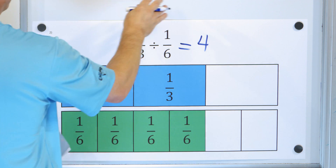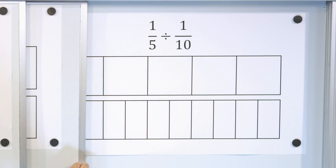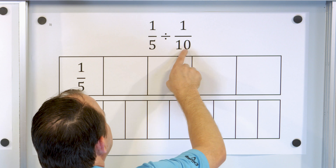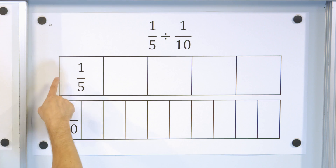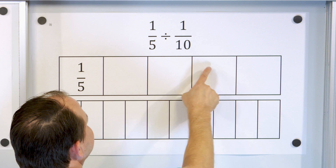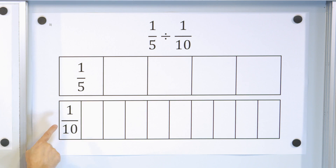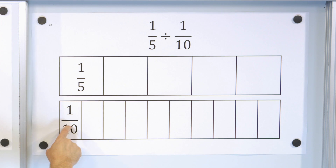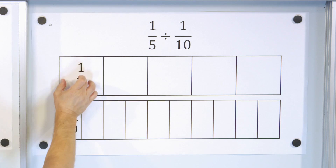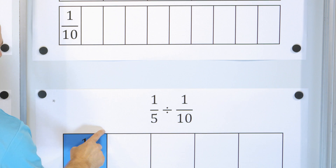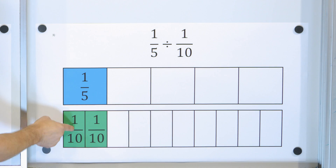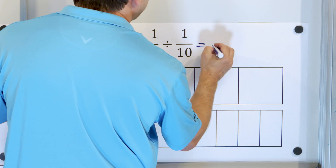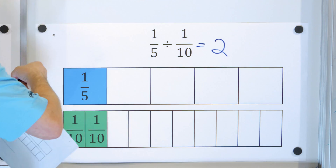Let's look at the next problem: 1 fifth divided by 1 tenth. Here we have 1 fifth — the candy bar cut into five pieces with only one. And 1 tenth is cutting it into ten pieces with only one. How many times can 1 tenth fit into 1 fifth? We have the 1 fifth and the 1 tenth, and it can fit two whole times. So 1 fifth divided by 1 tenth equals 2.